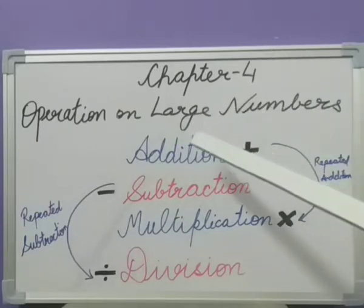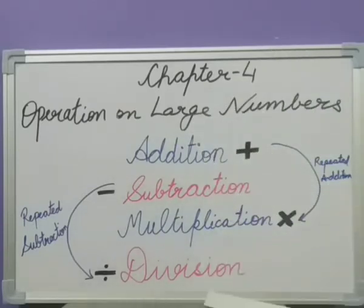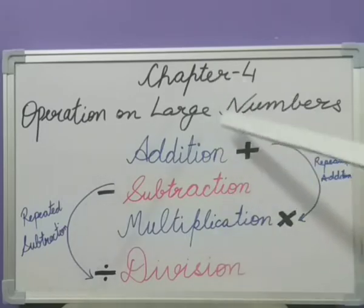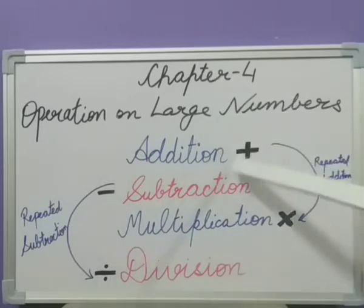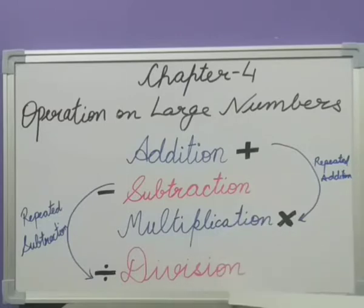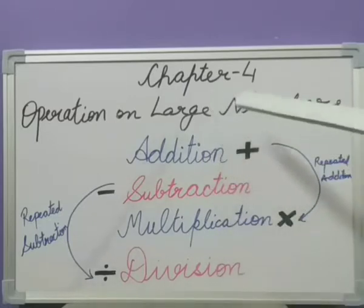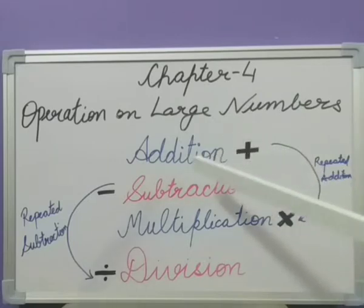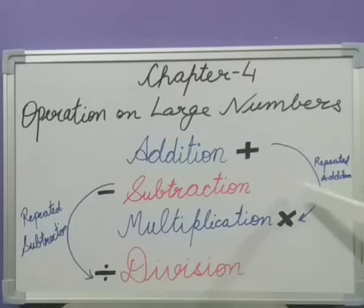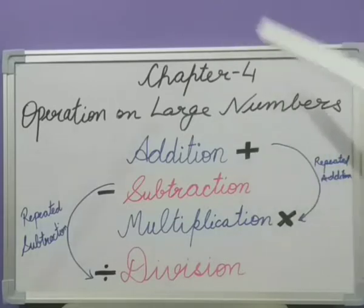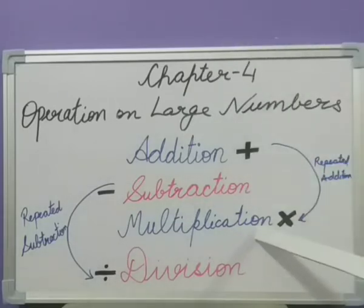Now these are some operations which can be done on large numbers starting from addition, subtraction, multiplication and division. So here is a relation between addition and multiplication. Repeated addition leads to multiplication. When we add a number again and again we can multiply.